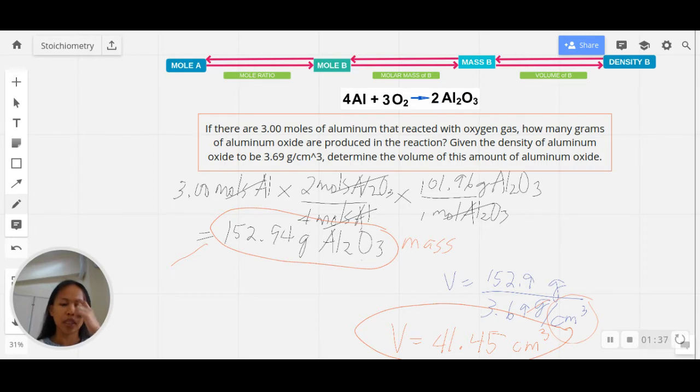Then you can get the mass of 152.94 grams of aluminum oxide. This is automatically your mass of aluminum oxide, which is expressed in grams. Grams is always the default unit of mass every time you're dealing with a mass-related problem in stoichiometry. If you go back to the density given, you're given 3.69 grams per cubic centimeter, so the unit of density is already compatible with your unit of mass.